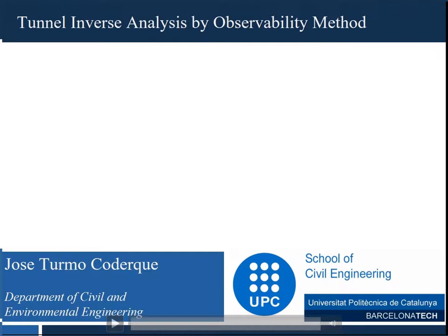A methodology to acquire mechanical properties of the existing structure and structural system model according to some measurements is so-called structural system identification, abbreviated as SSI. It means that we have to apply some load on a structure and measure deflections in order to obtain mechanical properties of the structure.